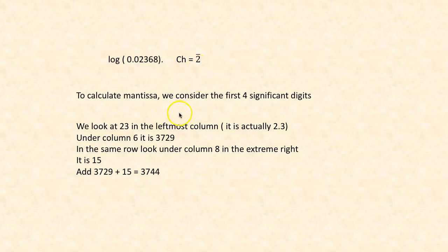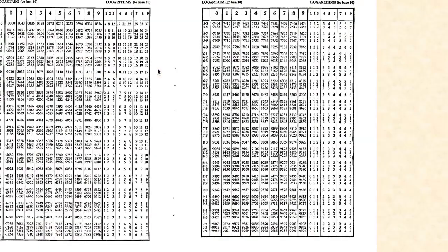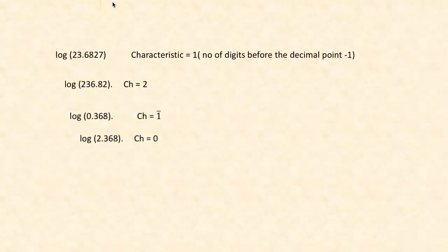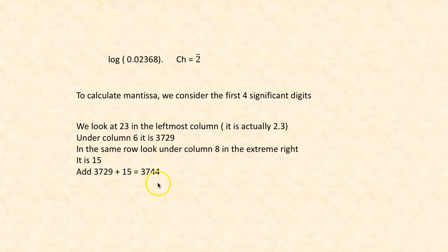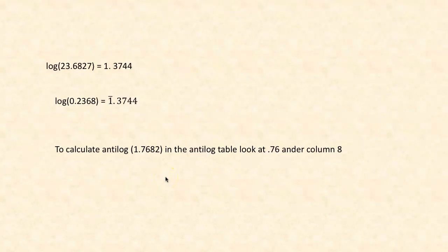To calculate the mantissa, we consider the first four significant digits. For instance, to calculate the mantissa of 0.02368, we look at 23 in the log table under column 6, which gives 3729, and under the mean difference column 8, which gives 15. So 3729 plus 15 gives 3744. The mantissa is 3744, so log 0.2368 would be bar 1.3744.